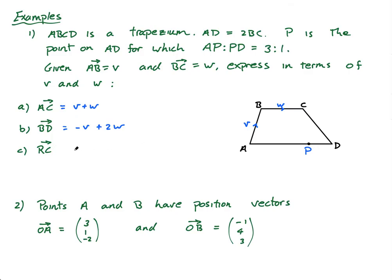Now for part C: how do I get from P to C? I'm going to have to go from P to A, then A to B, then B to C. So PC equals PA plus AB plus BC.